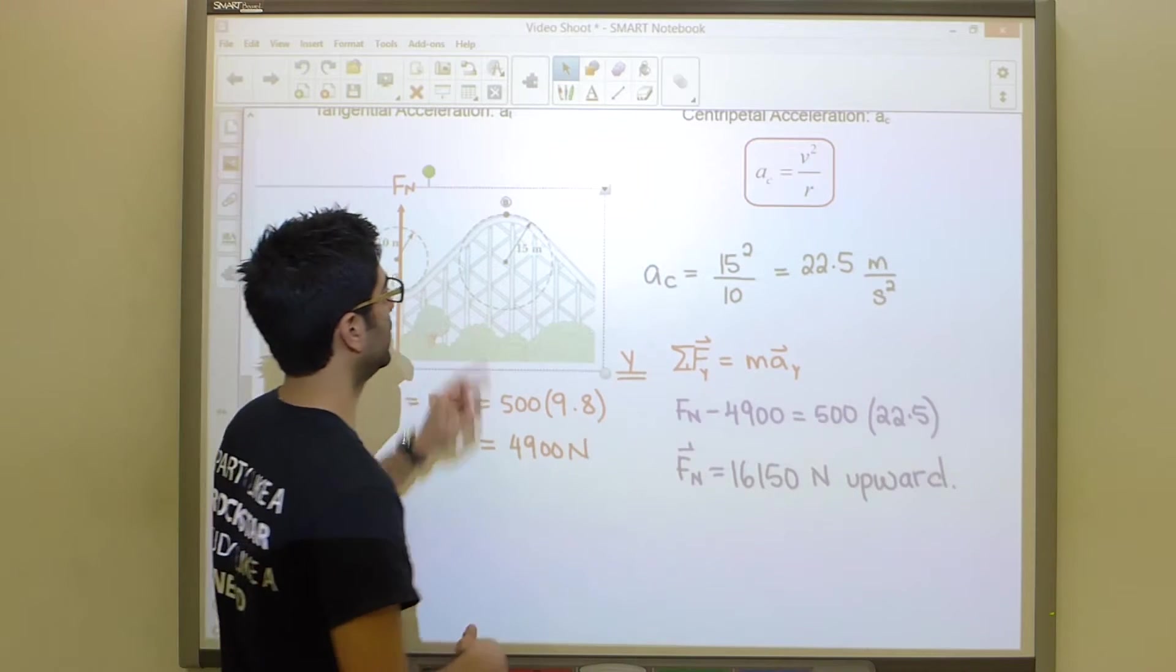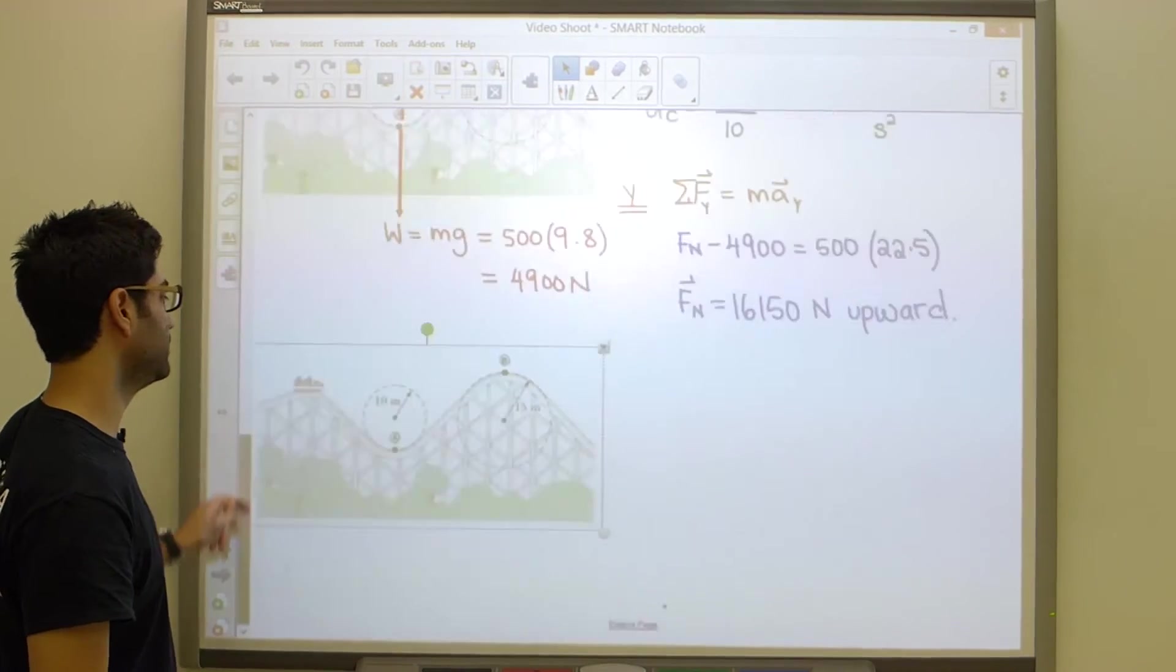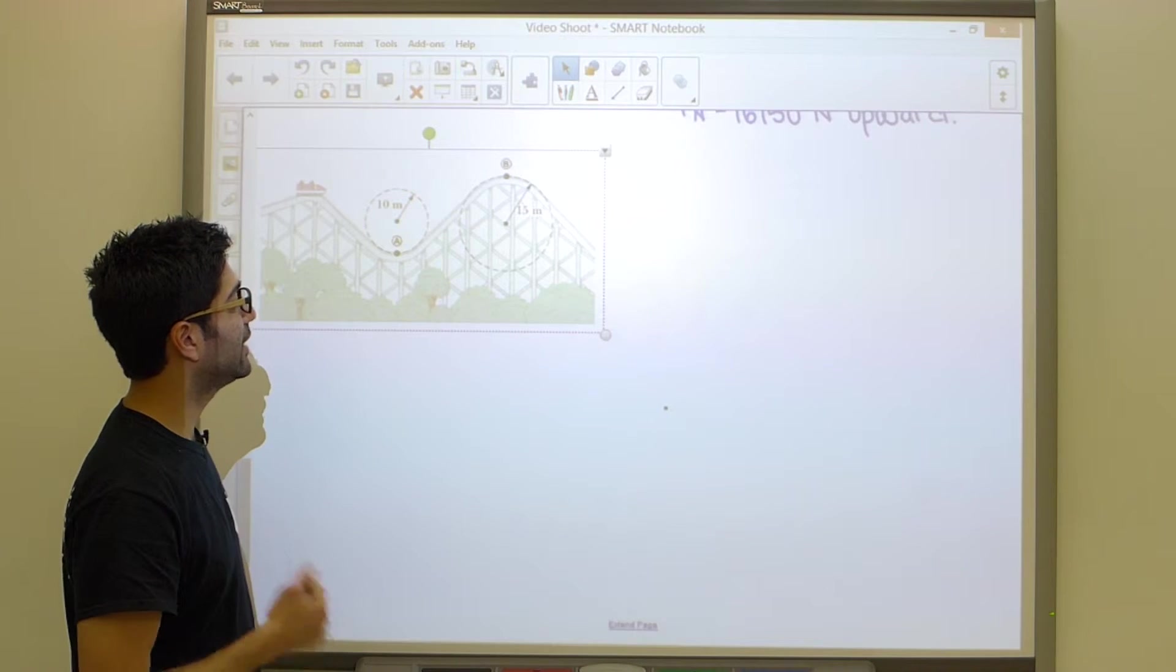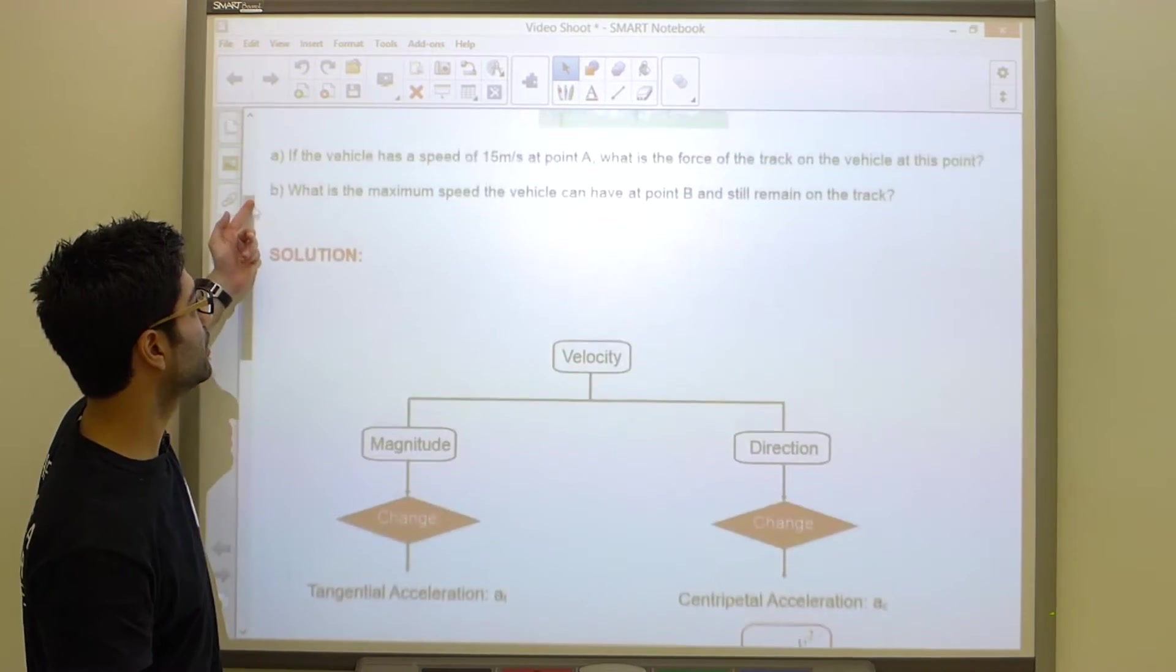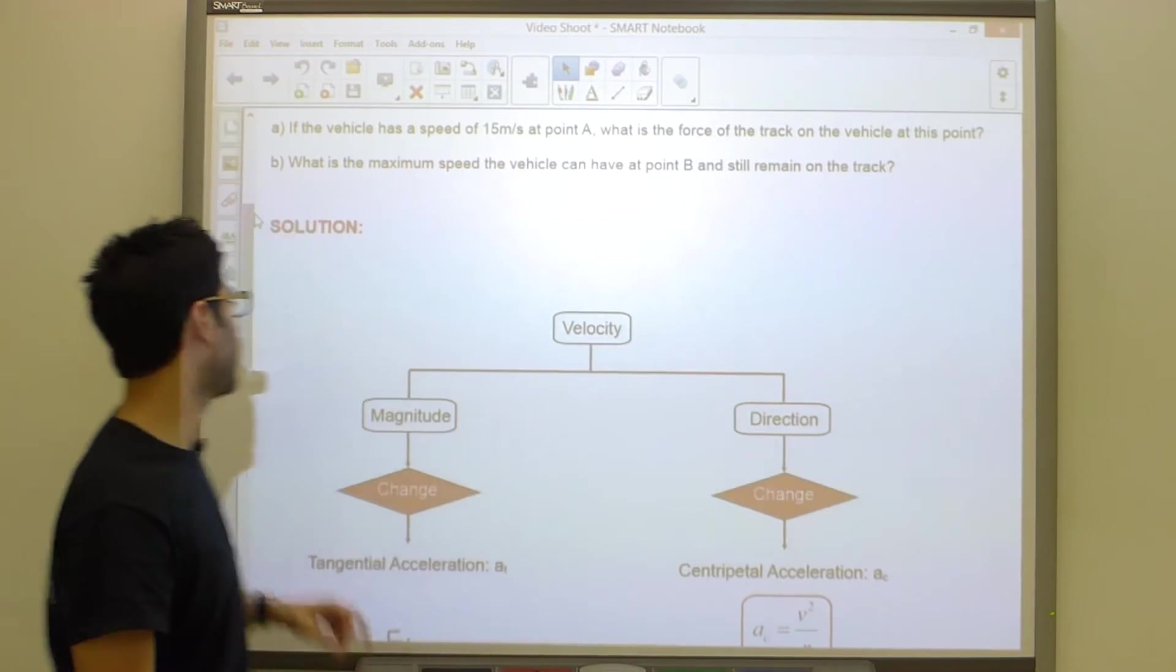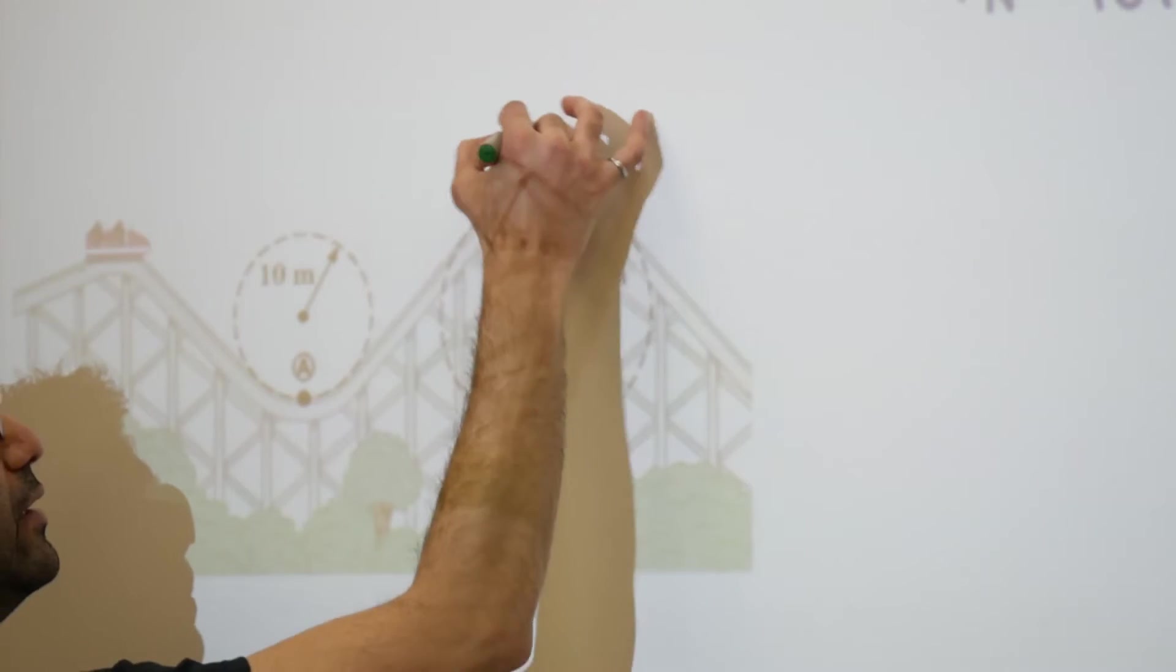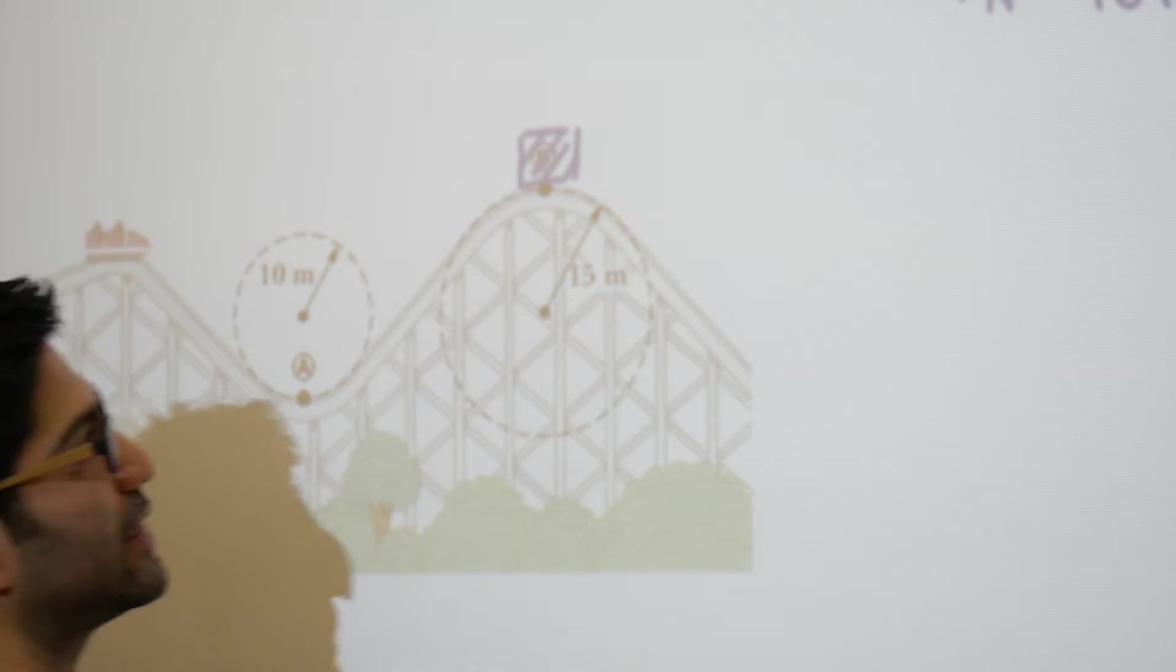The next question is more interesting and requires us to think a little bit. Part B asks what is the maximum speed the vehicle can have at point B and still remain on the track. How fast can we be traveling up here at B and not jump off the track? Let's apply a similar analysis and then think a little bit. First things first, let's identify our forces.